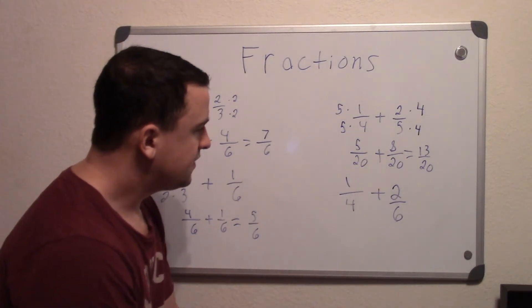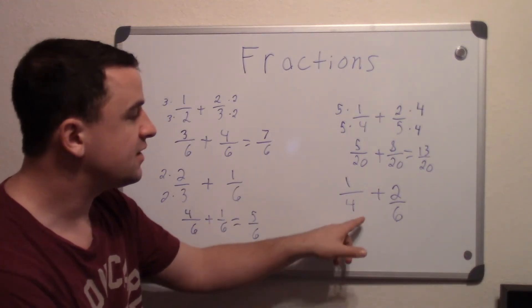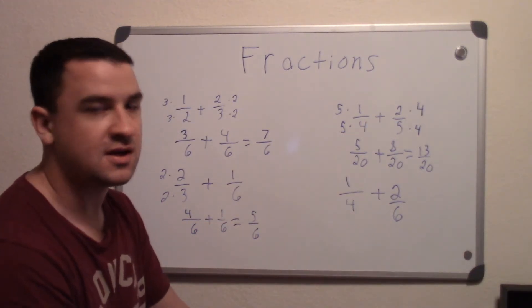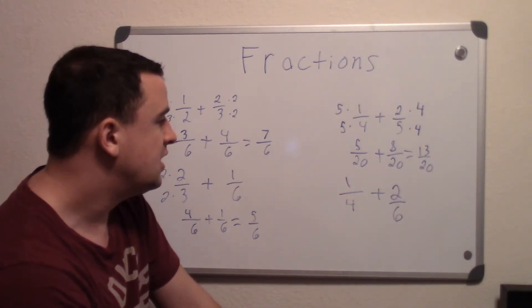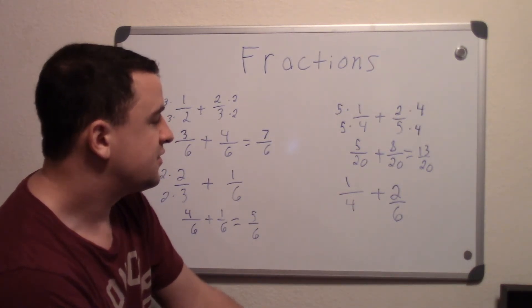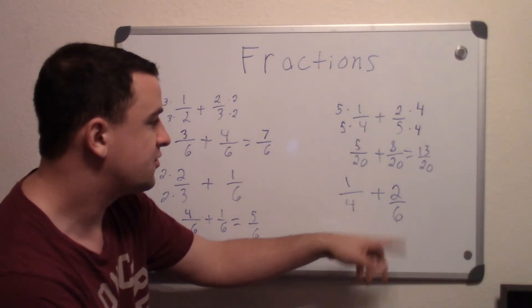Then we go on to this one. This one is actually now one where we don't have to multiply them. We could get 6 times 4 is 24, but that's a higher number. We can actually find a number that these both go into, which is 12. So 12 is going to be their lowest common denominator, the number that they both go into.